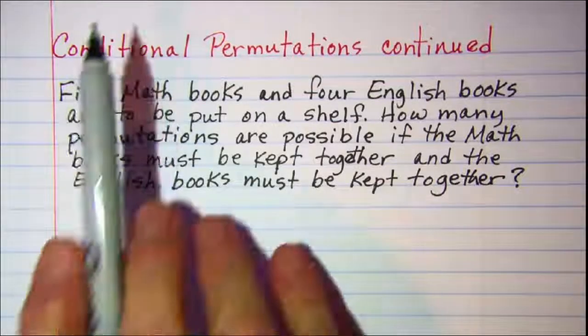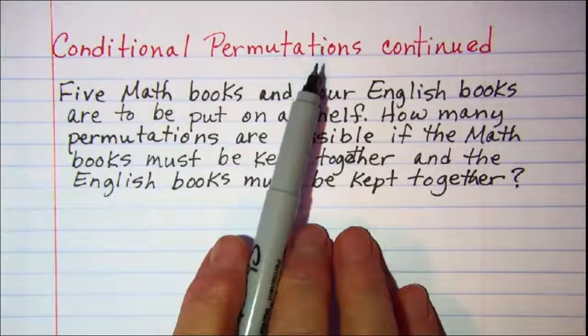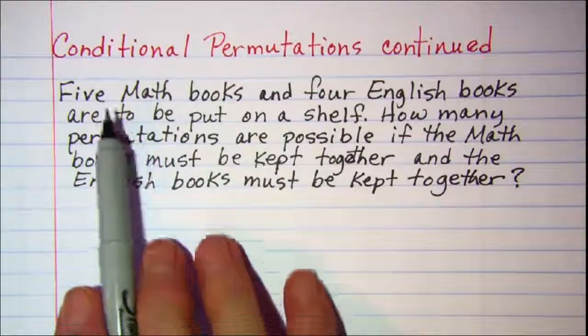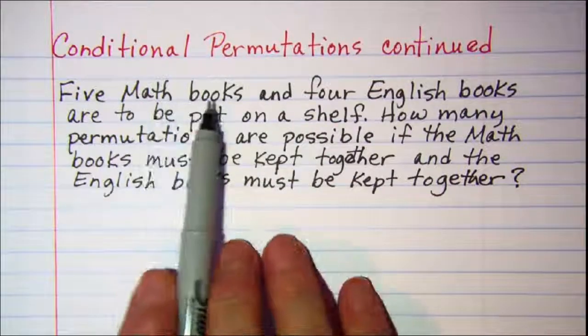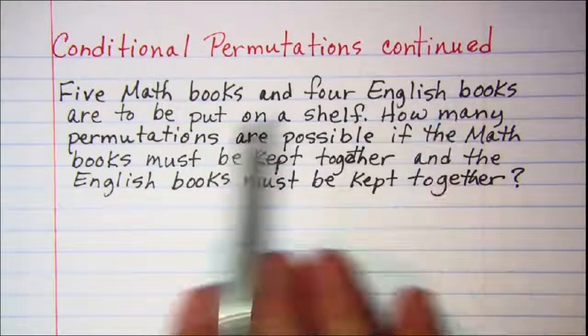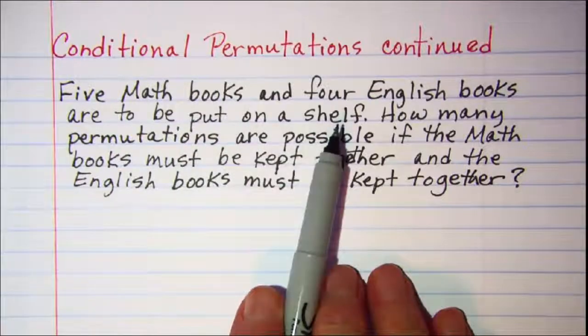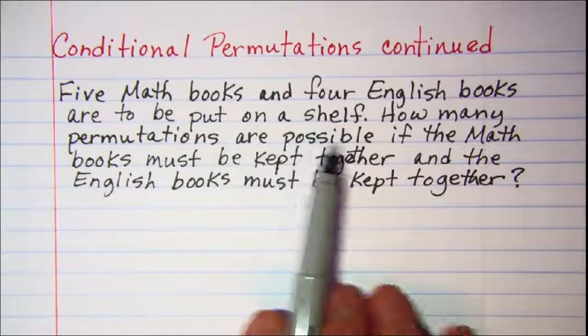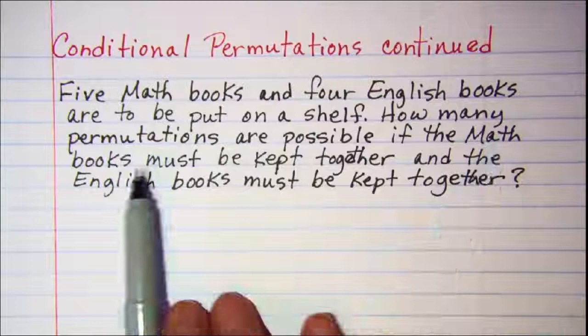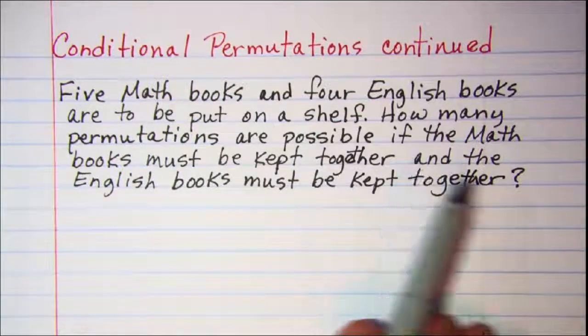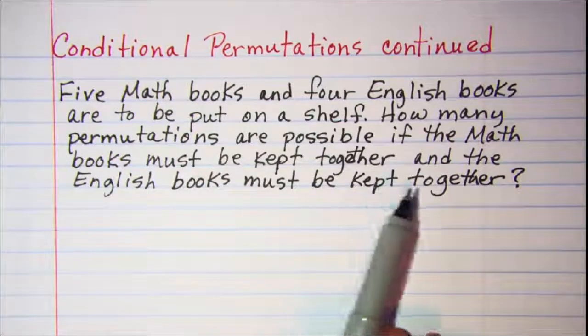In this video we'll be looking at some more conditional permutation problems. Our first one is five math books and four English books are to be put on a shelf. How many permutations are possible if the math books must be kept together and the English books must be kept together?